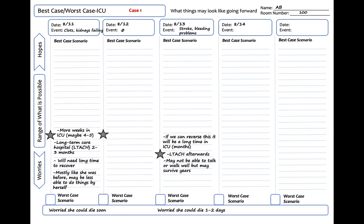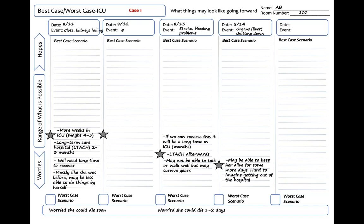Rounding on 8-14, she is going into multi-system organ failure. I note this as the event: 'organs shutting down.' You could also write 'needing more life support' to convey the impending circulatory collapse to families. There is less uncertainty today. I lower her star more towards the worst-case scenario, then write 'we may be able to keep her alive for some more days, but it is hard to imagine her getting out of the hospital.' On 8-15, her lungs and organs are failing — I write this as the event and move her star next to the worst-case scenario. In the best case, we can maybe keep her alive for another day or two. For the worst-case scenario, we are worried that she could die today.